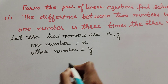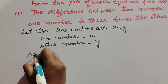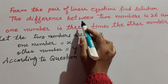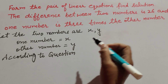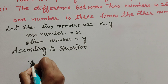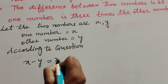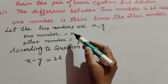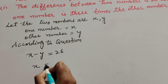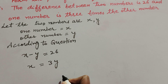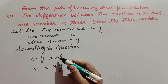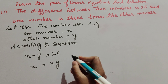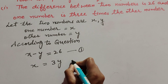According to the question, the difference between the two numbers is 26. So x minus y equals 26. One number is three times the other number: x equals three y. These are the two pairs of linear equations — we mark x minus y equals 26 as equation number one, and x equals three y as equation number two.